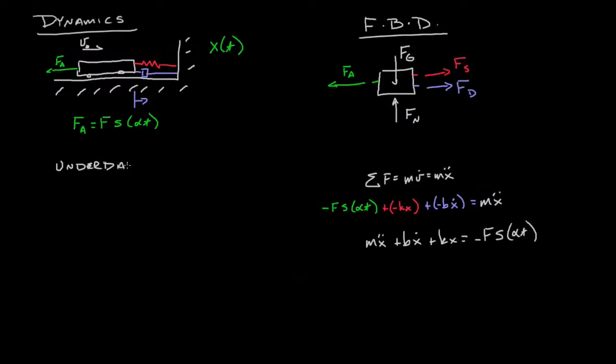Now that said, we know that x as a function of time is going to be the homogeneous solution plus any particular solution. In this case we'll have a particular solution. So we know what the homogeneous solution is, that's just the transient solution, that's what we've already worked with.